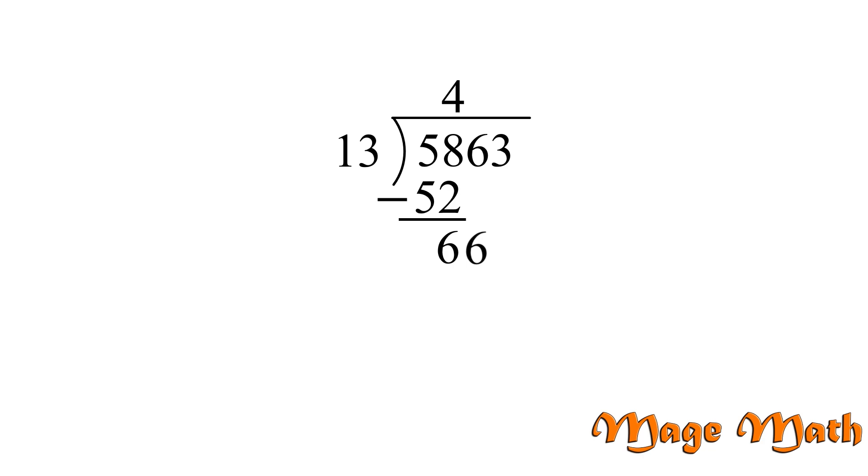13 goes into 66 how many times without going over? Well, we know 4 times 13 is 52, so we need to be more than 4 times. Let's try 5. 13 times 5 is 65, so that works. Write 5 up above, and then we know that 13 times 5 is 65. Next, we'll draw a line and subtract. 66 minus 65 is 1.